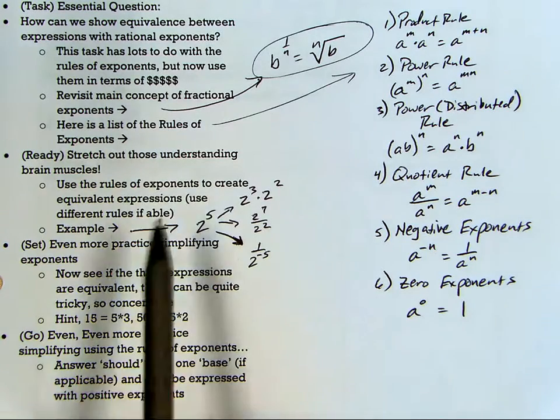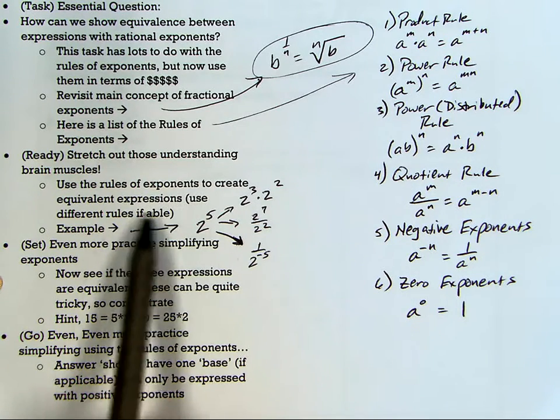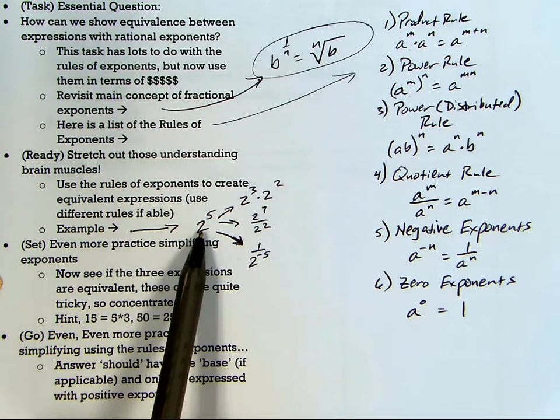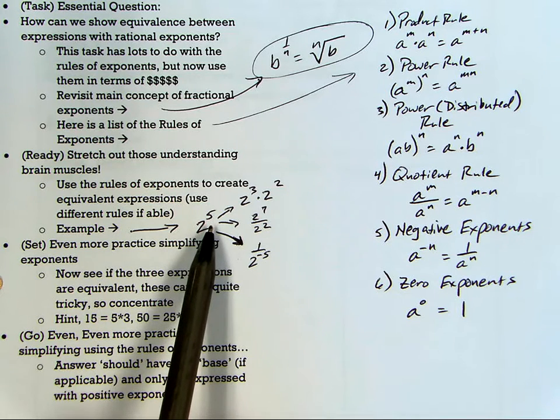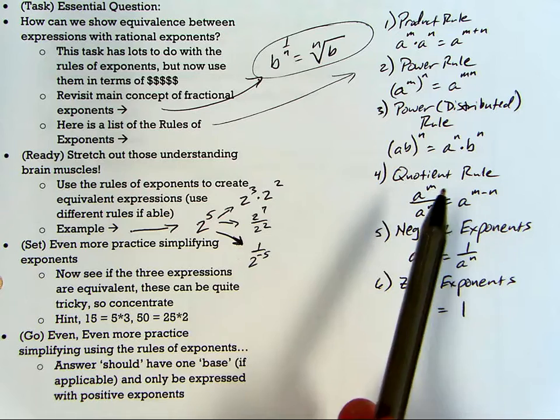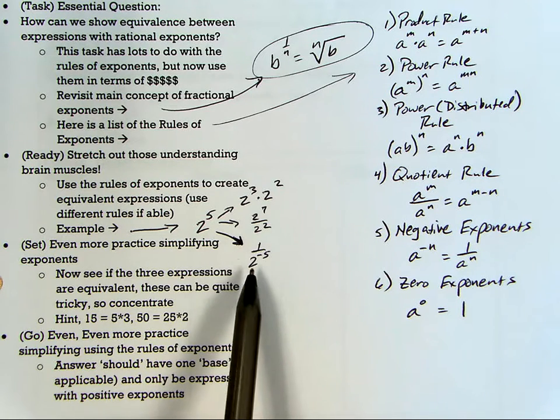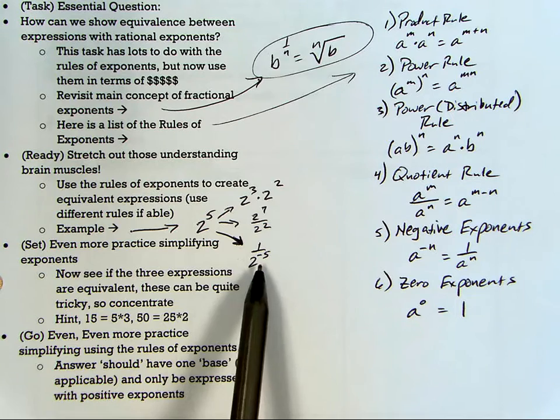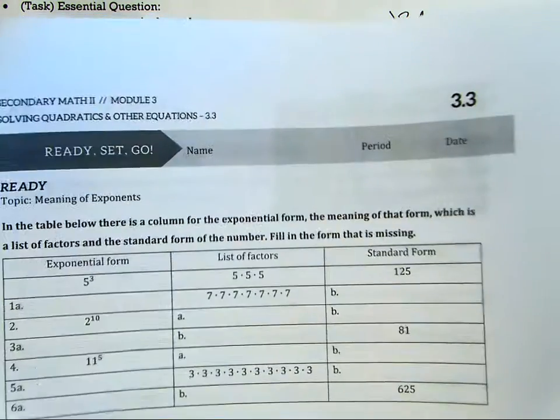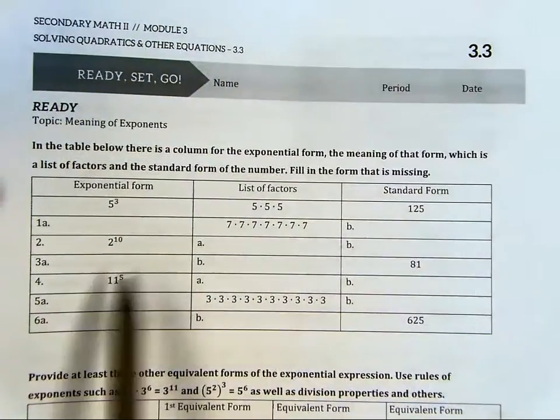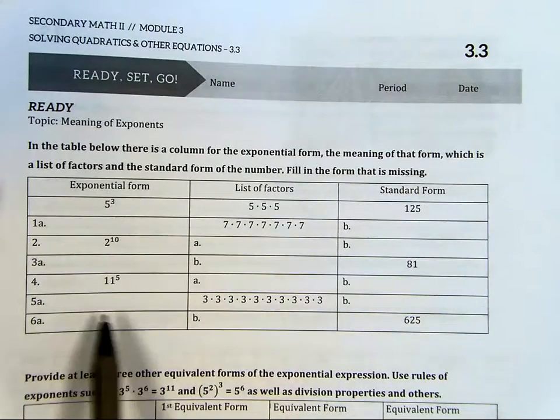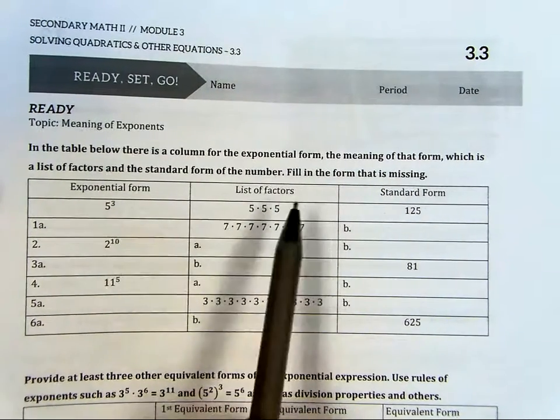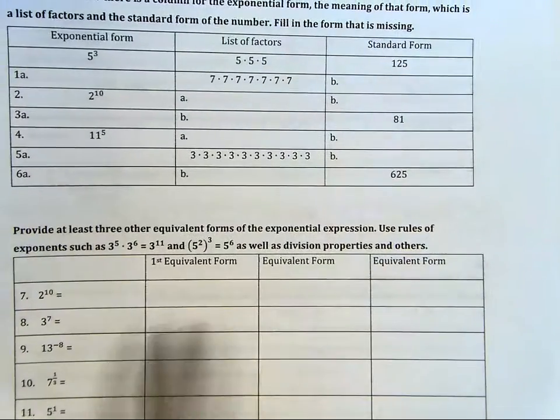So the ready is stretching out your understanding of these rules by writing equivalent expressions. For instance, 2 to the 5th, using any of these rules over here, I could write it these three different ways. Product rule, quotient rule, negative exponent rule. Okay, so the ready problems, they want you to write, given one form, write it in two different ways, listed like they have there for ready. And you create your own for 7 through 11.